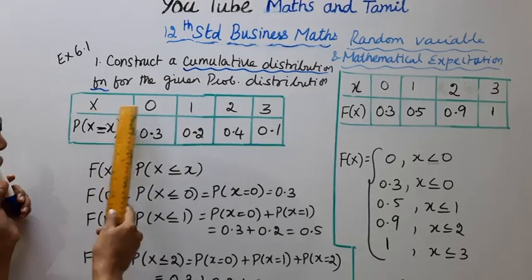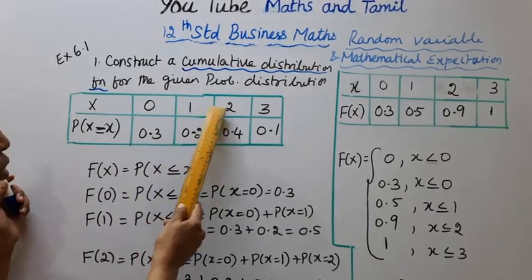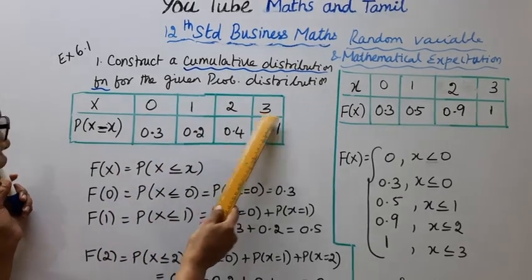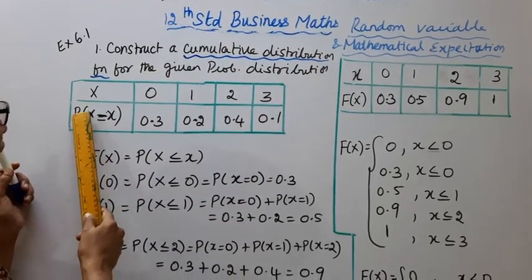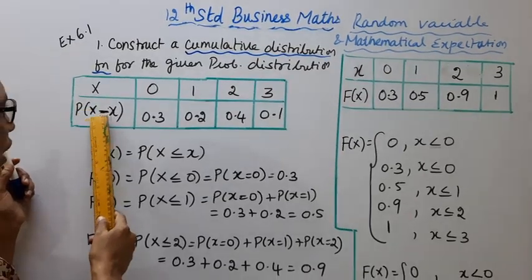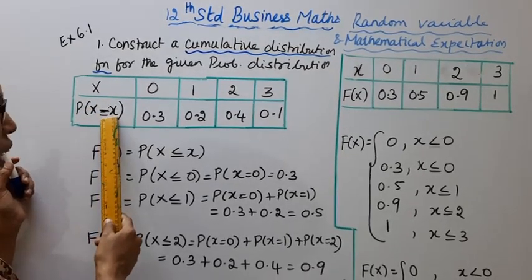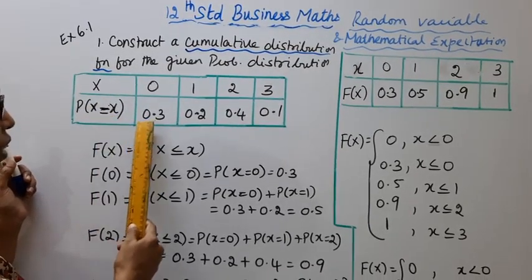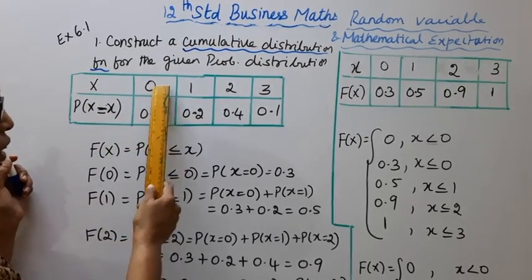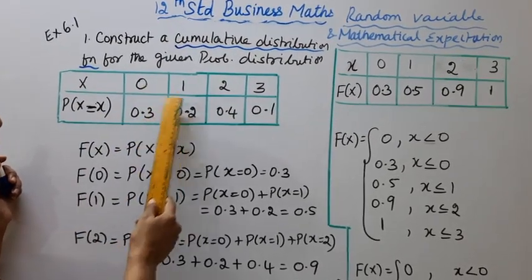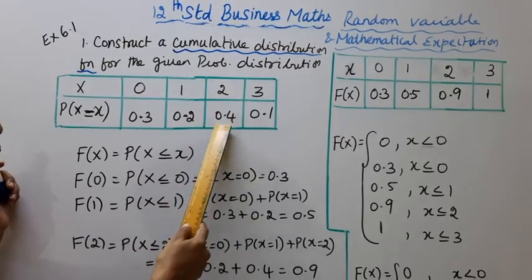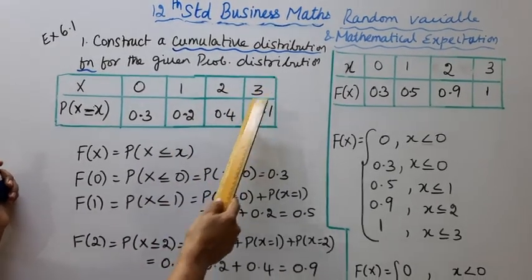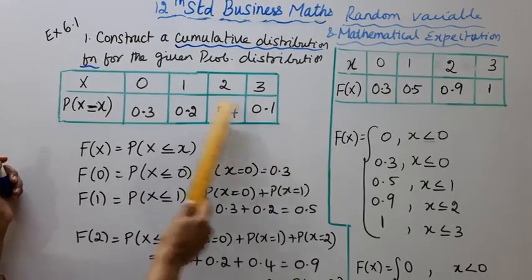Capital X takes values 0, 1, 2, 3. P of X — that is P(capital X = small x) — gives values: for 0 it is 0.3, for 1 it is 0.2, for 2 it is 0.4, and for 3 it is 0.1.